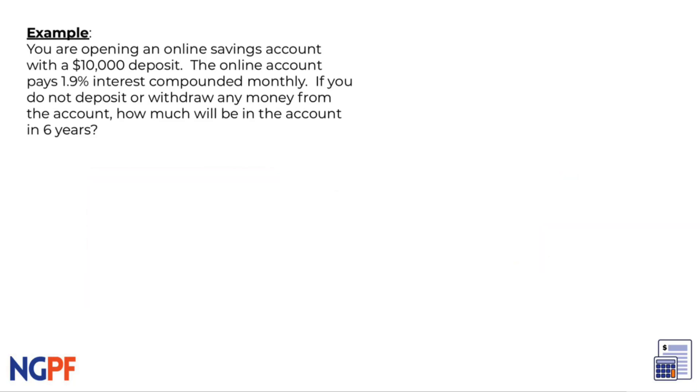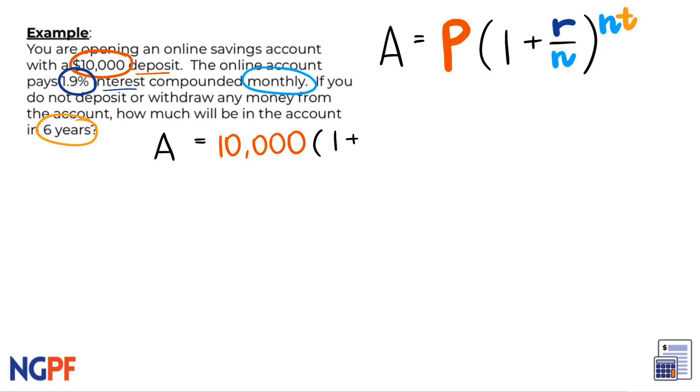For the compound interest formula, we need the principal, interest rate, number of times it will be compounded per year, and the number of years. We know our initial principal, how much we're starting off with, is $10,000, so let's put that in for P. Then we can drop and keep the addition of 1, which just stands for 100% of the original amount.